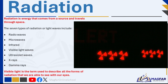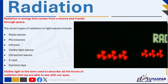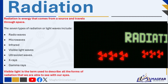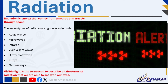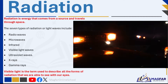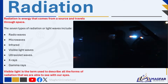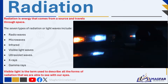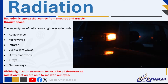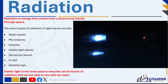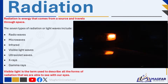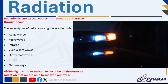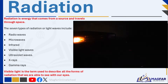All forms of radiation or light waves release light. However, we are blind to all of them except for visible light waves. Visible light is the term used to describe all the forms of radiation that we are able to see with our eyes.